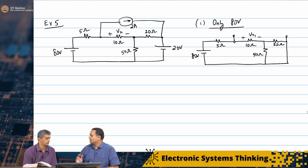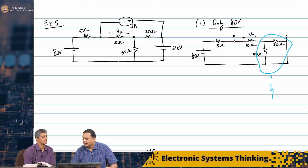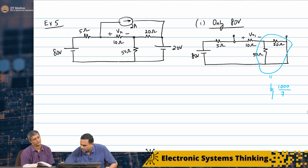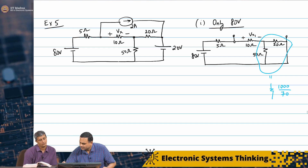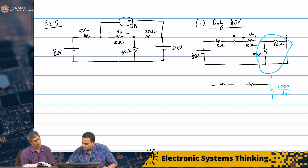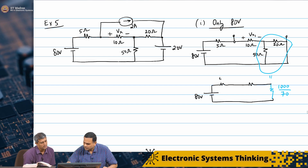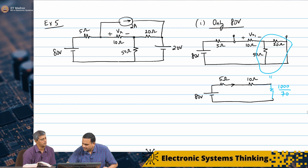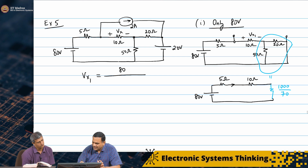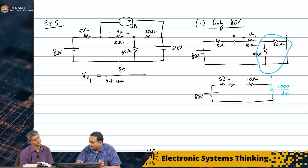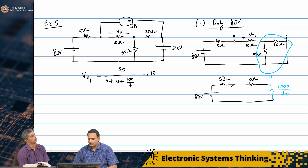I see that 50 ohms and 20 ohms are in parallel, which gives an equivalent resistance of 1000 by 70. The rest of the network can be populated around that. From here you find the current — I find out this current and multiply that by 10 ohms. So Vx1 is basically 80 divided by (5 plus 10 plus 100/7), times 10. This gives us 5600 by 205 volts.